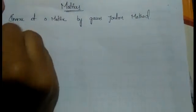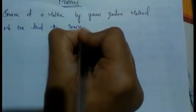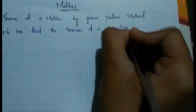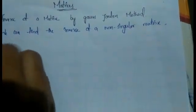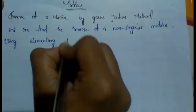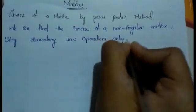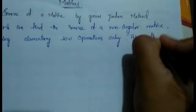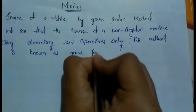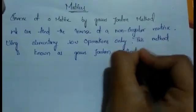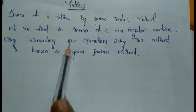We can find the inverse of a matrix which is non-singular — it means a matrix whose determinant is not equal to zero — using elementary row operations only. This method is known as the Gauss Jordan method.